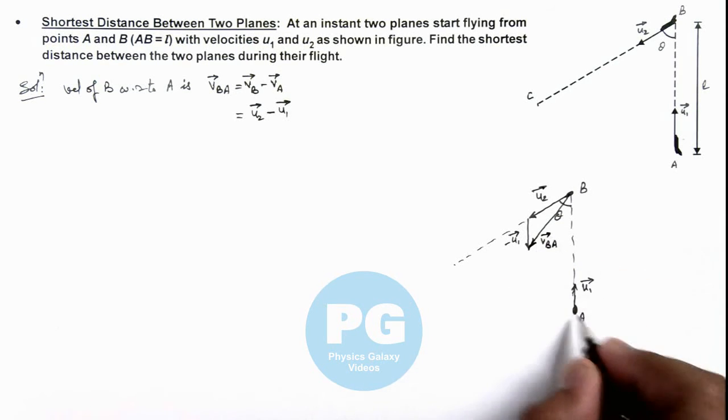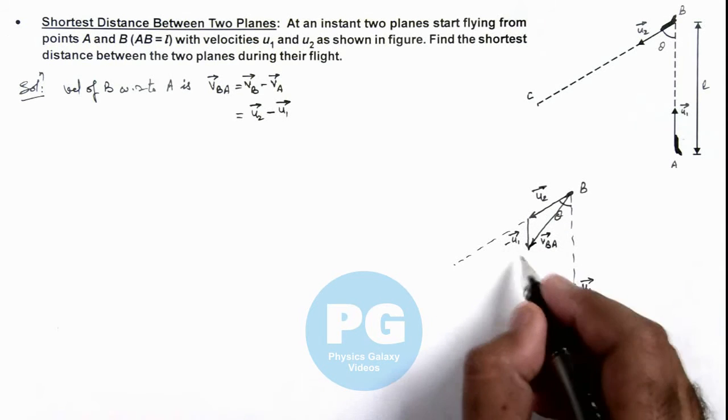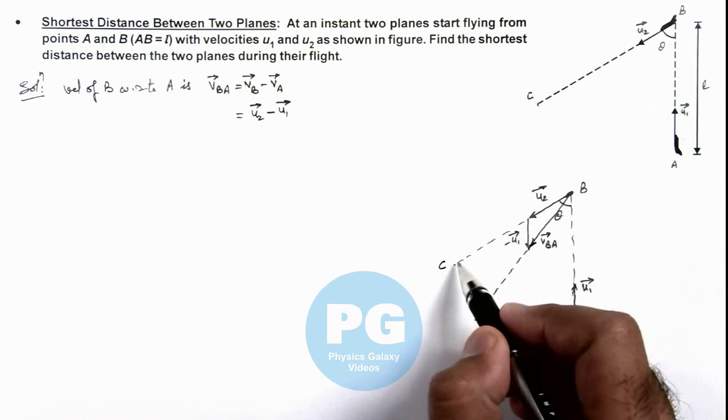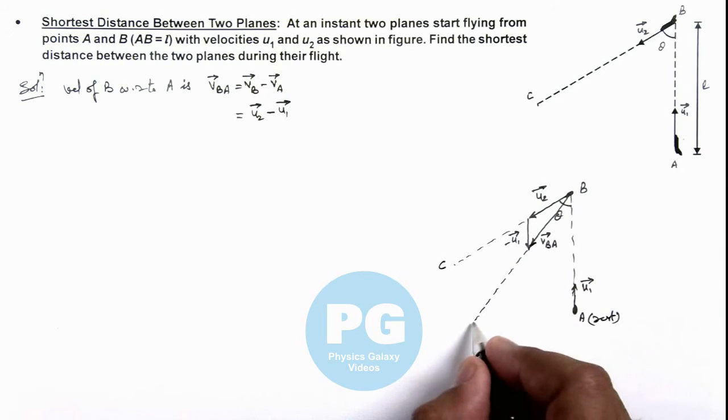That is, keeping A at rest when we observe B, the plane B appears to move in this direction. The original direction of motion of B was along line BC. Now it appears to move toward line BD.